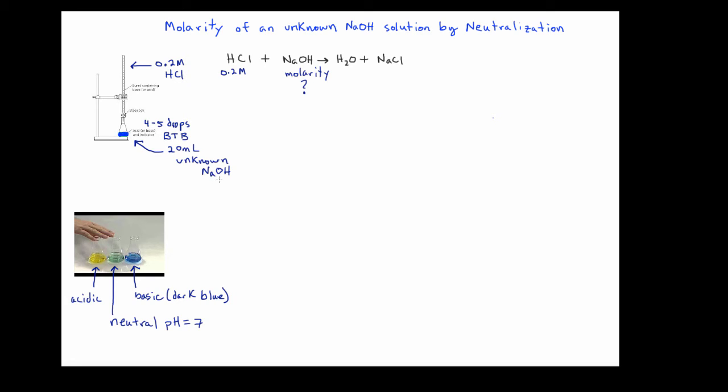That should be a precise volume of 20 mils of the NaOH solution for which the student does not know the molarity. In the case of the solution in the burette, the student has loaded a 0.2 molar solution of hydrochloric acid very carefully establishing the zero mark at the top of the burette. And remember that the burette holds 50 mils of total solution. So then the student begins the titration.